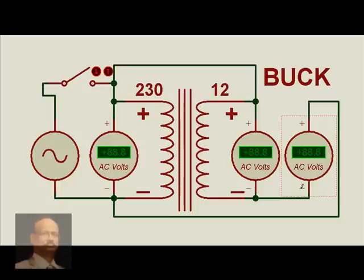Similarly for the buck operation, we have an arrangement here again in series, but here the plus is connected to plus and minus to minus. In the process, the voltage is definitely reduced. And when we switch this on, we find 230 volts, 12 volts minus, and 218 volts that we get. This is how the buck-boost of the voltage in a transformer happens, and that is the basic principle of a voltage stabilizer.